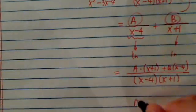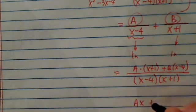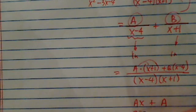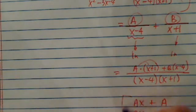Let's spread this out on top. So I have Ax plus A. I'm just distributing in here. And then I have Bx plus minus 4B, basically. And all this, when you add it together, has to equal to 1.